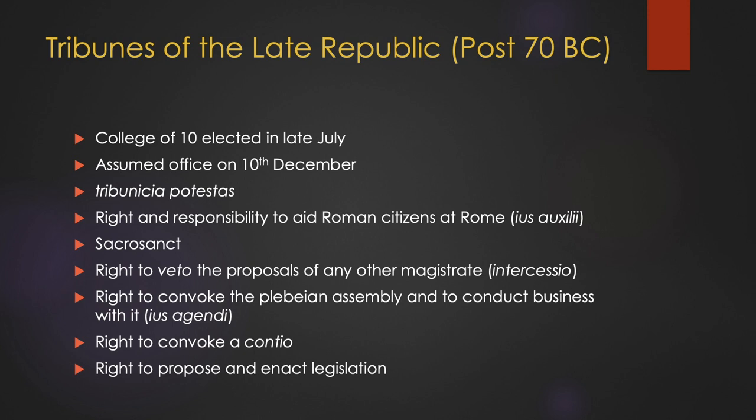In addition to protecting the persons and property of the plebeians at Rome, the Tribunes also had to communicate to the patricians the wants and needs of those that they were protecting. In order to do this, Tribunes of the Plebs had the right to convoke contiones and the concilium plebis, in order to enter into discourses with the plebeians — to convoke the plebeian assembly and to conduct business with it. Tribunes of the plebs possessed the ius agendi, which was also enjoyed by the consuls and praetors. As magistrates, they also had the right to call contiones, which were meetings open to the populace, serving as occasions for the promulgation of legislation or the advocating or rejecting of certain proposals.